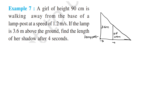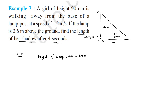We need to find the length of her shadow after four seconds. Given: height of lamp post AB is equal to 3.6 meters. Height of girl PQ — let it be PQ — is 90 centimeters or 0.9 meters.